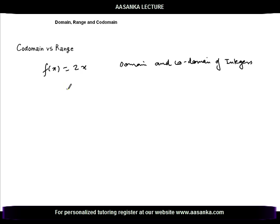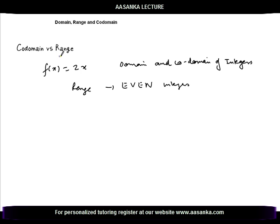We repeat the distinction between codomain and range once again with an example. If f(x) = 2x and you say the domain and codomain are both the set of integers, then it is obvious that the range will be the set of even integers. So though the codomain is all integers, even integers will be the range because multiplying any integer by 2 always gives an even number.